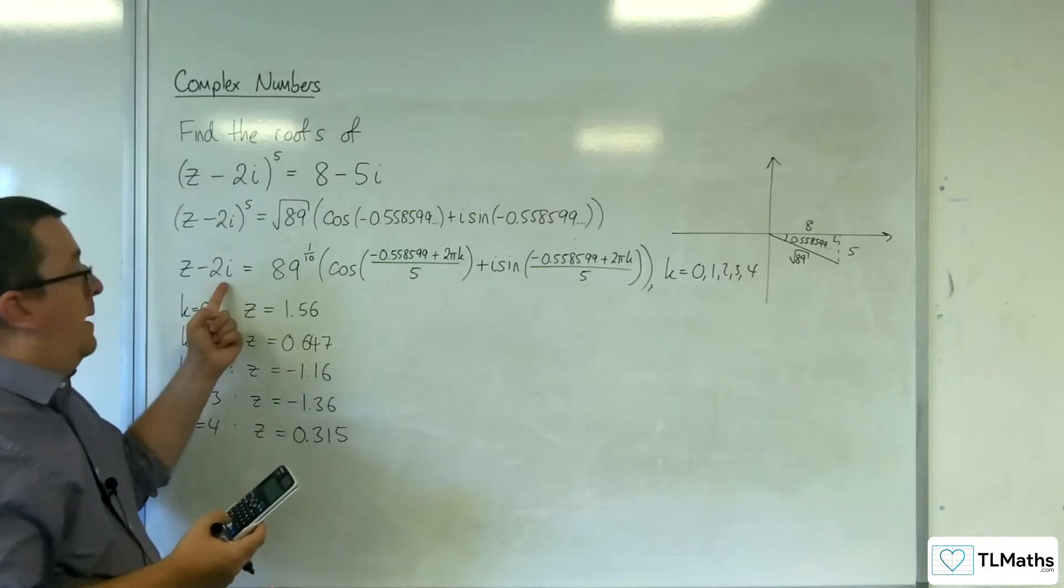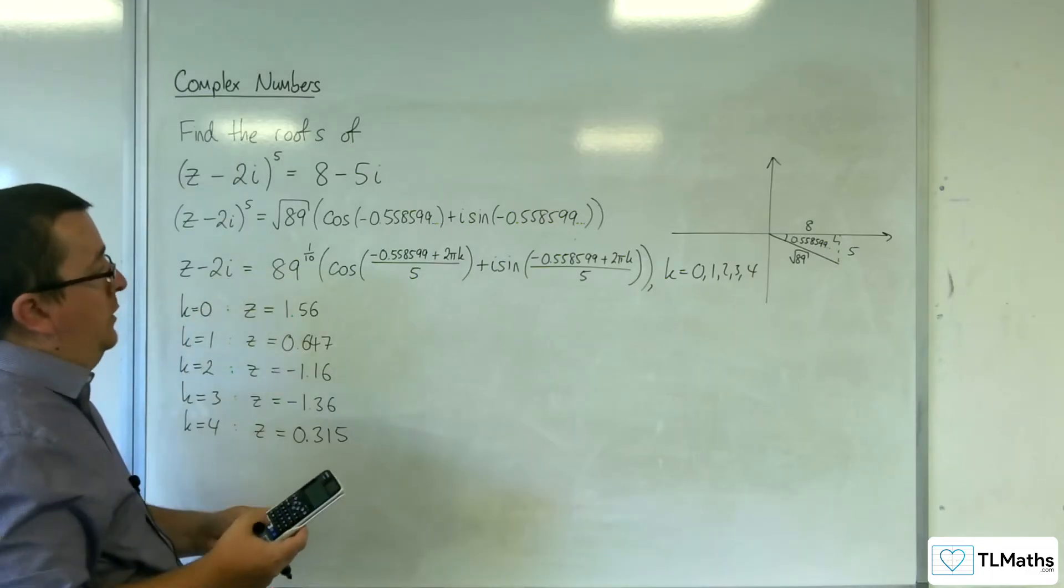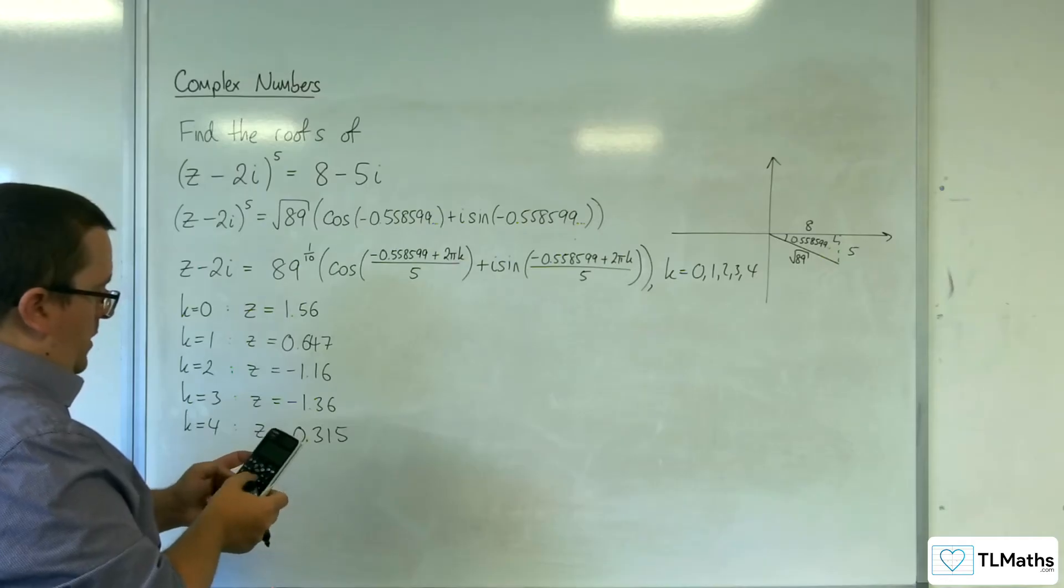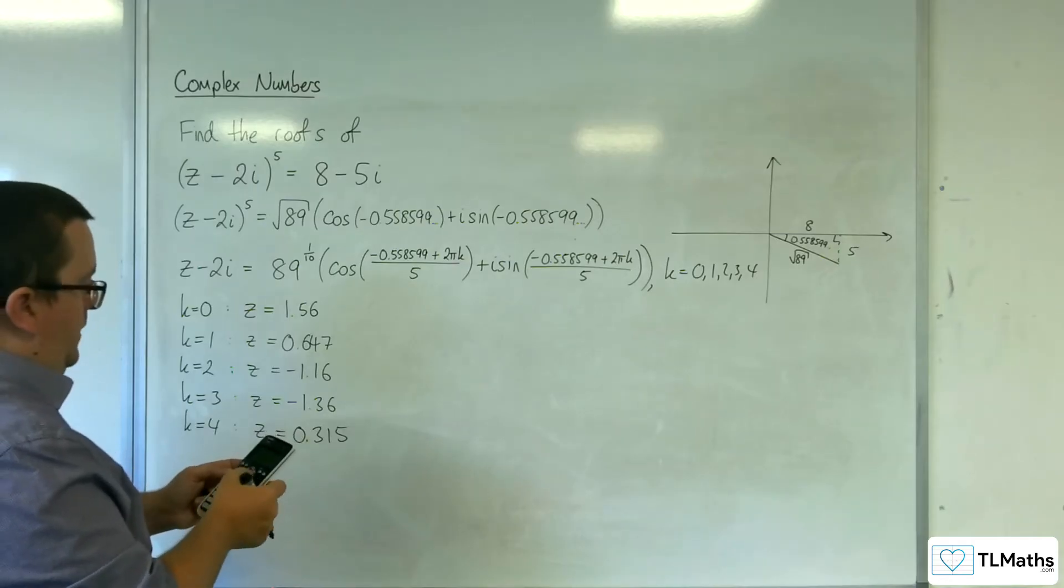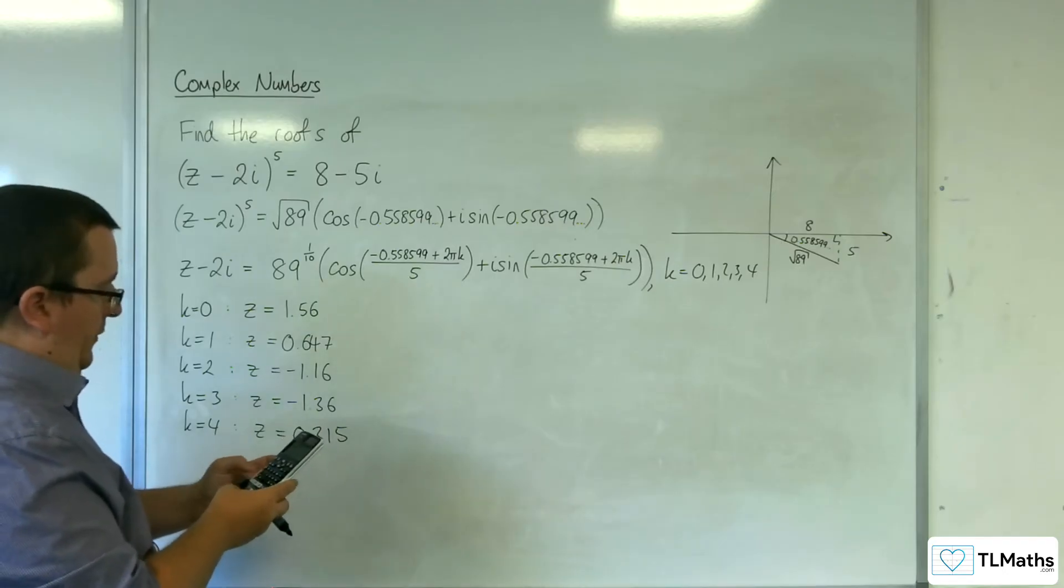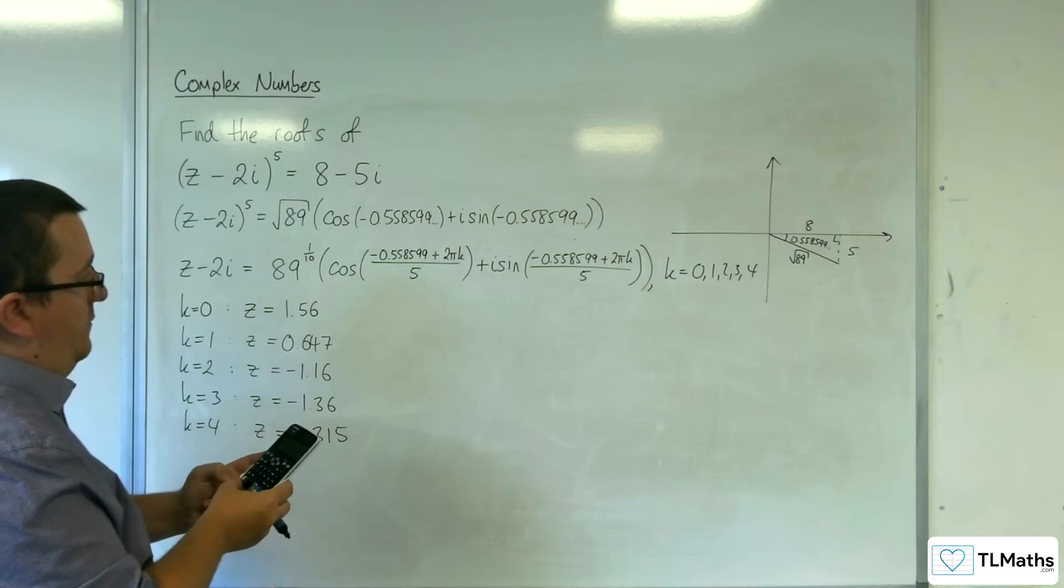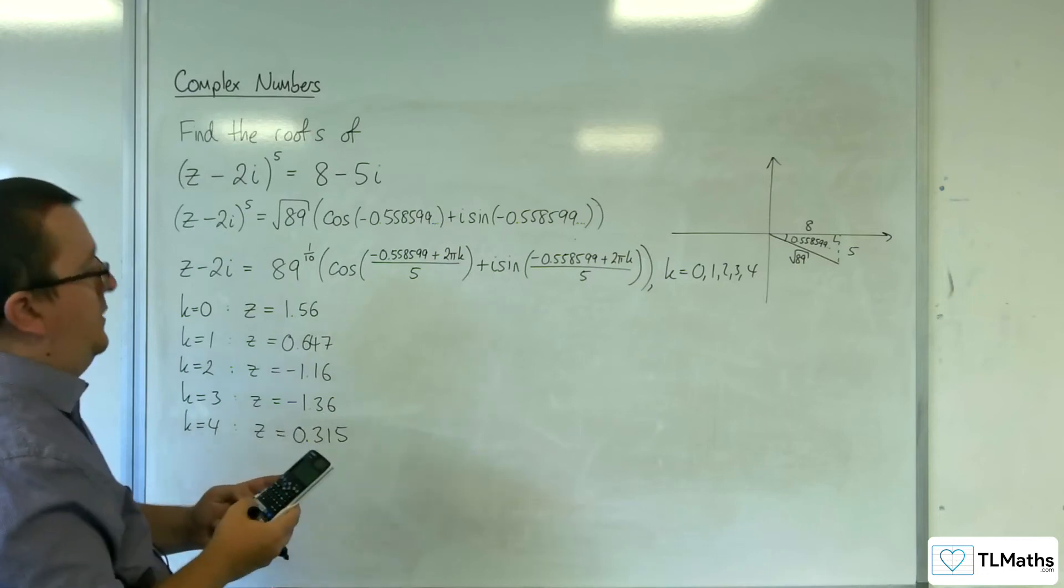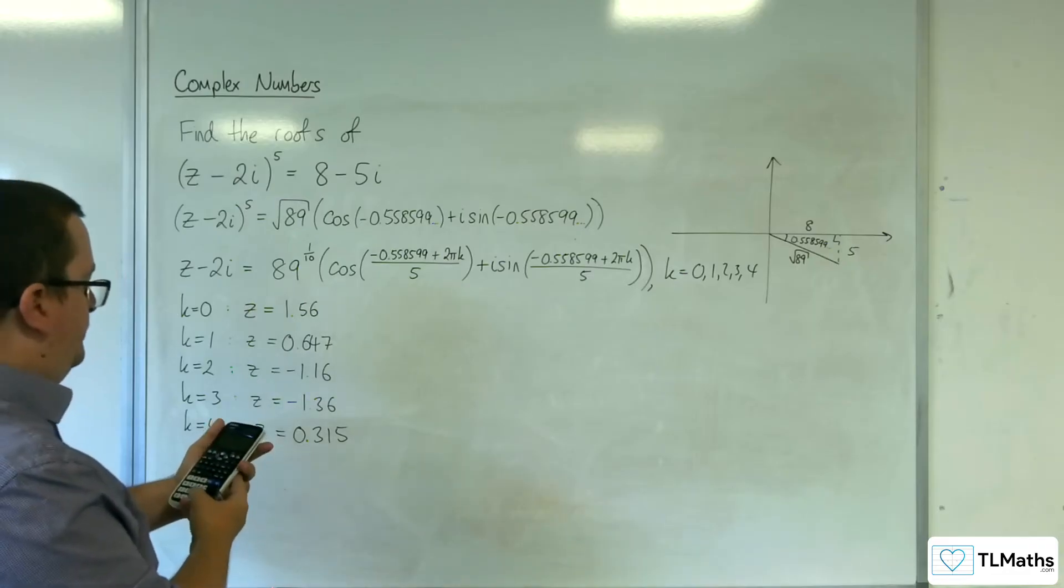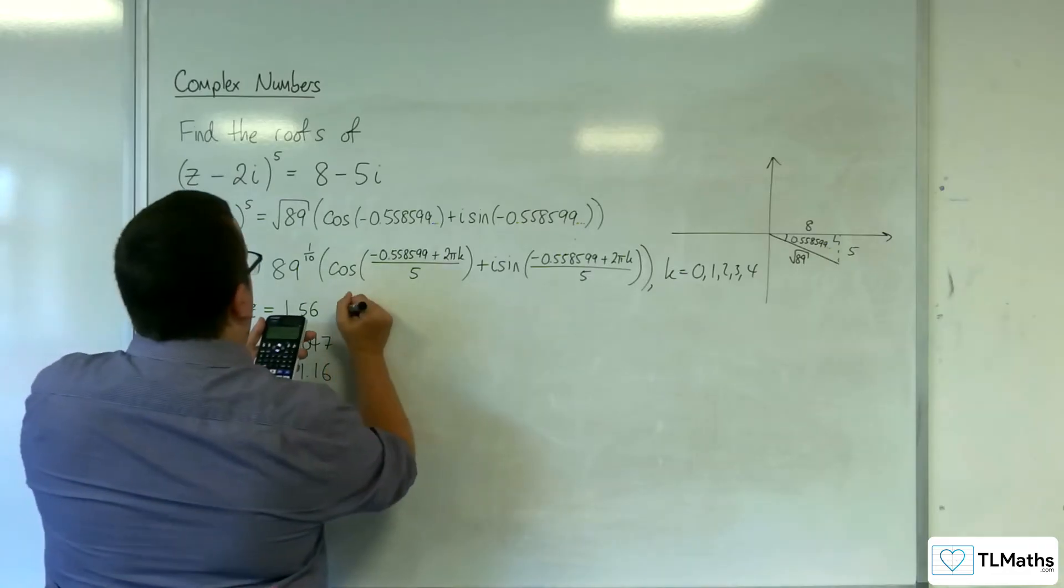Now for the sine bit. Remember, you're adding on the 2i as well. So we've got 89 to the power of 1 tenth times by sine of minus 0.558599 divided by 5. And remember, you're adding on the 2 as well. So for the first one, we get plus 1.83i.